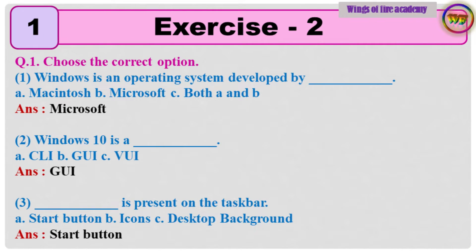Question number 1. Choose the correct option. Question 1: Windows is an operating system developed by dash. A. Macintosh, B. Microsoft, C. If both A and B. Answer: Microsoft.